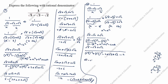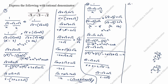Next: root 5 minus root 3 plus root 2, divided by root 5 squared is 5, plus root 3 squared is 3, minus 2 root 5 times root 3 is root 15, minus 2. So 5 plus 3 is 8, minus 2 is 6, giving 6 minus 2 root 15. We factor out 2: 2 times (3 minus root 15).